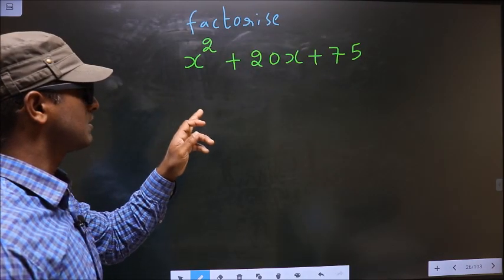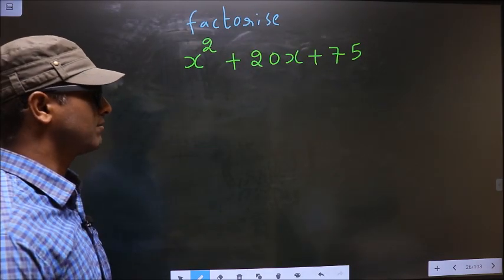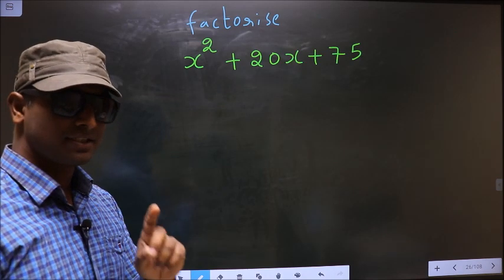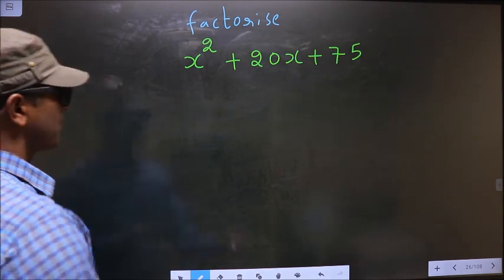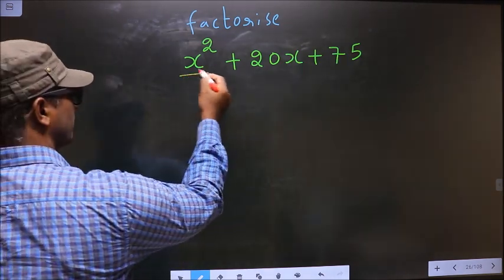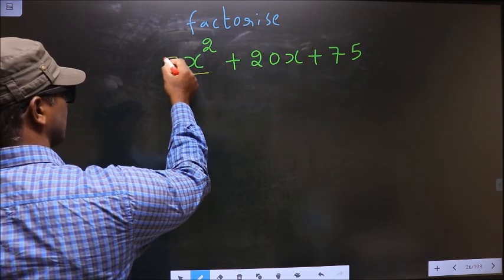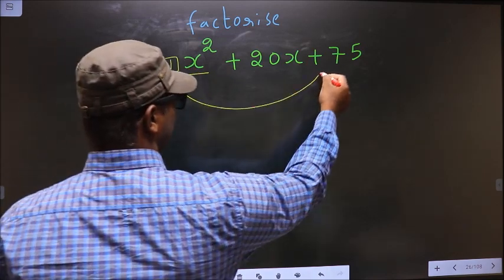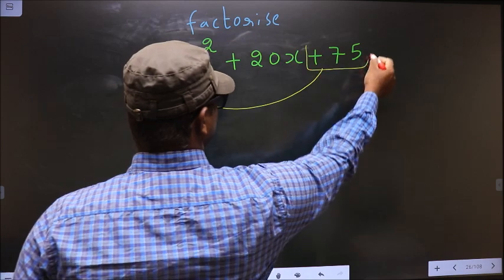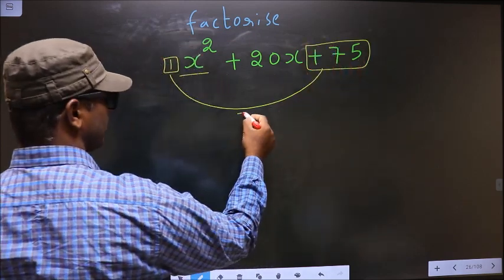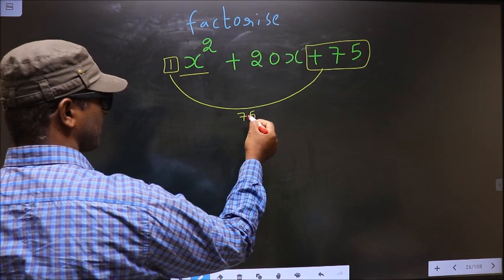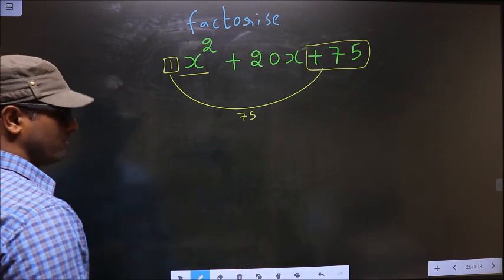Factorize x square plus 20x plus 75. To factorize, step 1: the coefficient of x square, that is 1 here, should be multiplied to the constant, that is plus 75. So 1 into 75 is 75. This is our step 1.